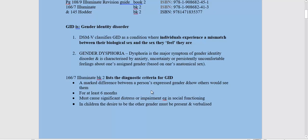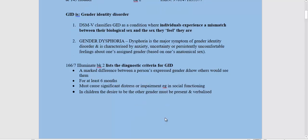The diagnostic criteria: a marked difference between a person's expressed gender and how others would see them, which must recur for over six months and be causing significant distress and/or impairment — for example, in social functioning. In children, the desire to be the other gender must be present and must have been verbalised.